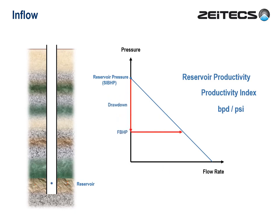If we draw down more, the flow rate will be higher. Simple. But the great thing about this is that all the relevant reservoir and fluid properties are built into this single line. The PVT properties of the fluids, the temperature, the porosity, permeability, height, net to gross, and the skin — which is the amount of damage the drillers do when they drill the well. So we have here a very simple, but a very powerful tool.